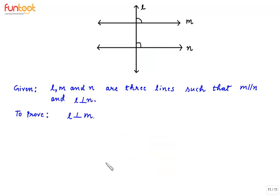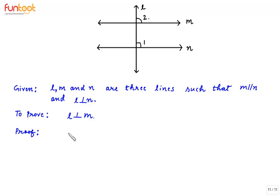Let's do the proof. We are given that L, M, and N are three lines such that M is parallel to N and L is perpendicular to N, and we have to prove that L is perpendicular to M. We label the angles: angle 1 and angle 2. Angle 1 equals 90 degrees because L is perpendicular to N.